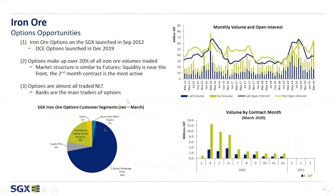Now I would like to mention options very briefly. We launched them in September 2012, while DCE launched their options at the end of last year. Our options account for 20% of the total iron ore volumes traded, and the market structure is very similar to the futures market structure. Liquidity is concentrated at the front of the curve, with the second month being the most active. Most of the activity in our options is traded as NLT, which stands for Negotiated Large Trade — basically block trades. The main participants are banks, brokerage firms, and international trading houses.